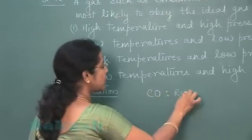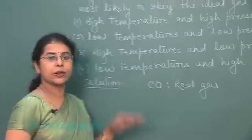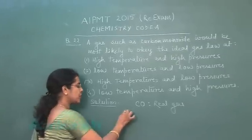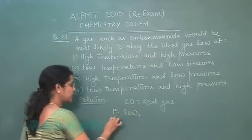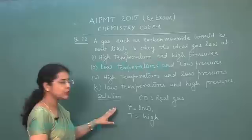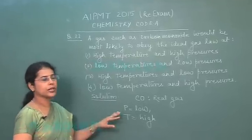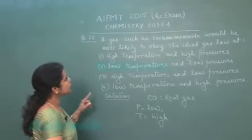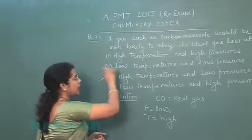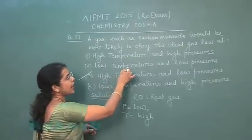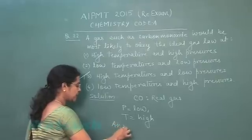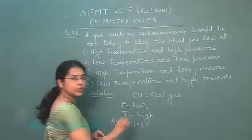As we know all gases are real gases, so carbon monoxide is also a real gas. But all real gases behave like an ideal gas when pressure is low and temperature is high. So in the given options we have to see in which option low pressure and high temperature is given. This is the condition at which carbon monoxide behaves like an ideal gas. It means the correct answer should be the third option.